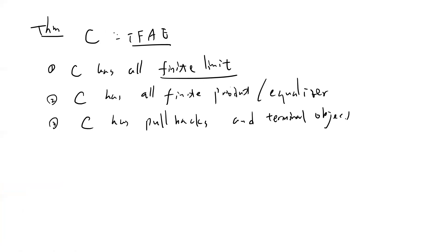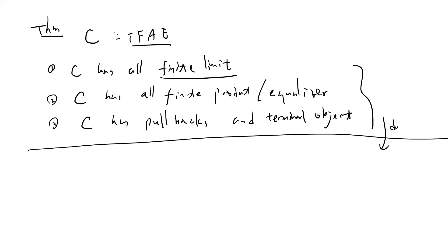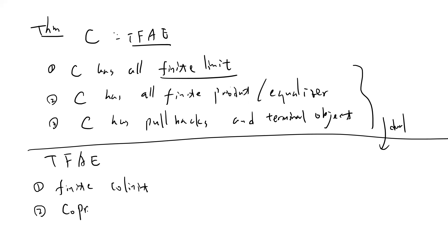This theorem tells you that limits, products, equalizers, pullbacks, and terminal objects are all related. You can also dualize this idea to get the co-limit version: finite co-limits are equivalent to co-products and co-equalizers.